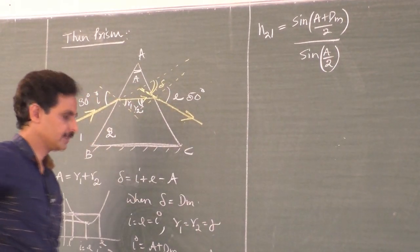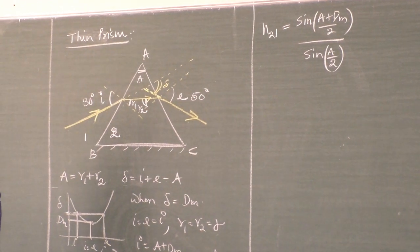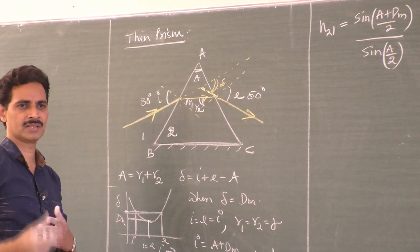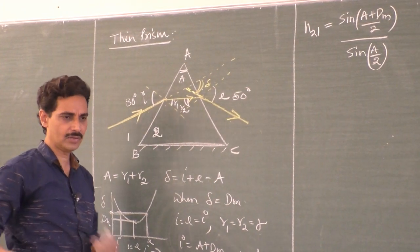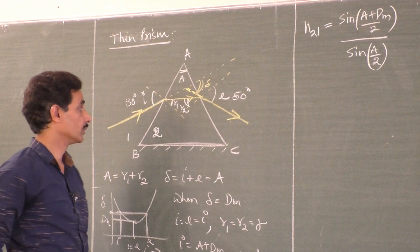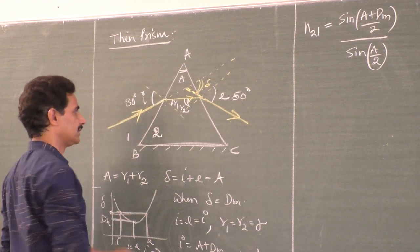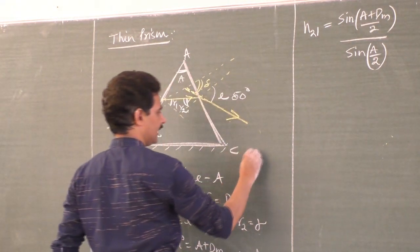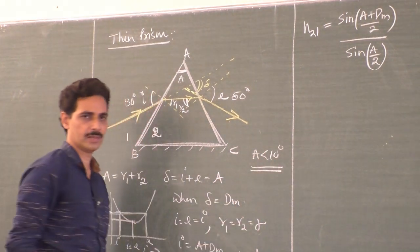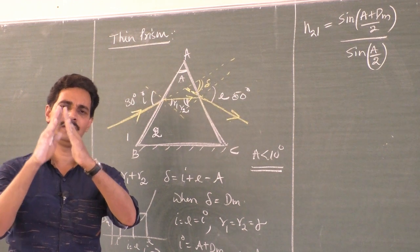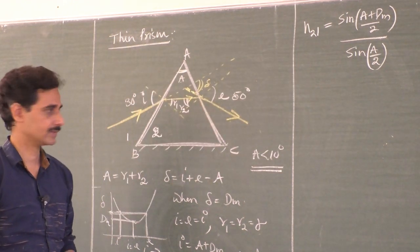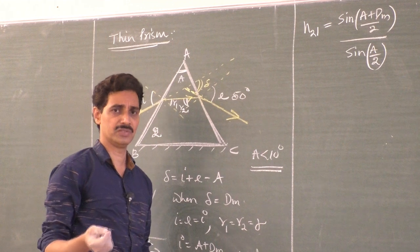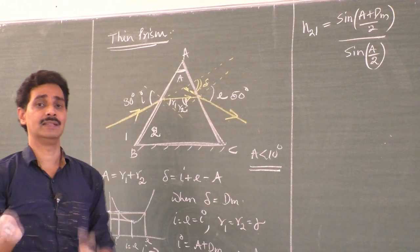My aim is to discuss a thin prism, which is very useful. If you want to see the amount of deviation or angle of refraction without mathematical calculation, people use a very thin prism. What do you mean by a thin prism? The angle of the prism is A — the angle made by the two refracting faces. If this angle is less than 10 degrees, then such a prism is called a thin prism. A thin prism is one whose refracting angle A is very, very small — less than 10 degrees.